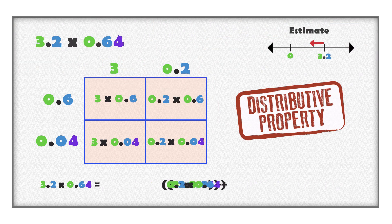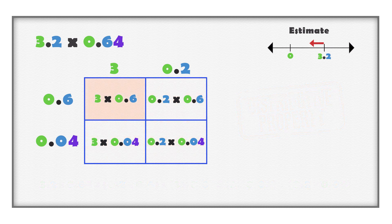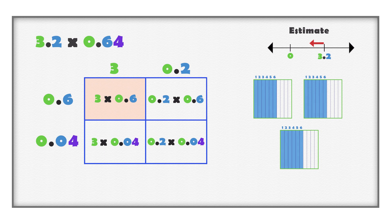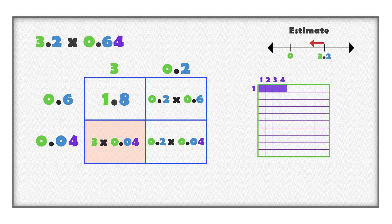The partial products can be calculated in any order. Start with three multiplied with six tenths. Three multiplied with six tenths means three groups of six tenths. There are eighteen tenths. Eighteen tenths is the same as one whole and eight tenths. Three multiplied with six tenths is equal to one and eight tenths. Next, multiply three with four hundredths, which means three groups of four hundredths. Three multiplied with four hundredths is equal to twelve hundredths.